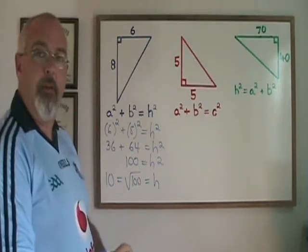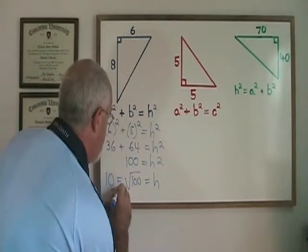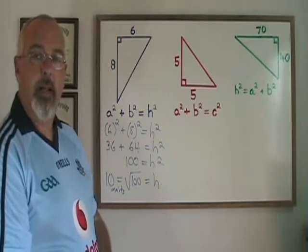Because no unit of measure was given in the problem, I'm just going to write 10 or 10 units. The hypotenuse in this blue right triangle is 10 units in length.